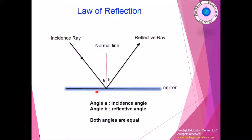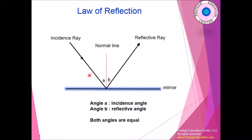This law of reflection is true for any light reflection, whether it's a flat surface or a rough surface. That's why you see a nice clear reflection with a flat surface. If the surface is bumpy, you will see different scattering of waves, but if you measure the angles, they will still be the same.